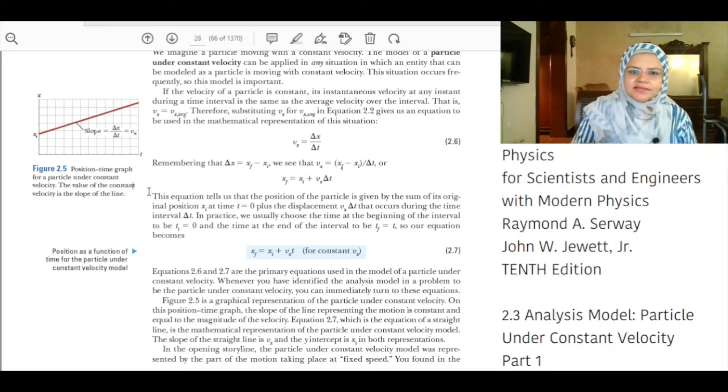This equation tells us that the position of the particle is given by the sum of its original position, xi at time t equal to 0, plus the displacement Vx delta t that occurs during the time interval delta t.